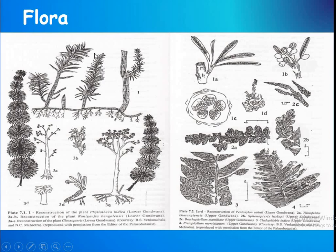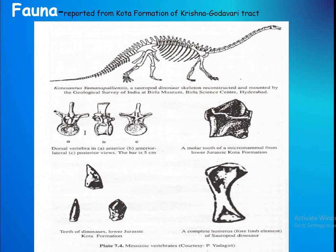These are the floras of the Gondwana. Lower Gondwana. The significant fossil is Glossopteris. Flora reported from the Kota Formation of the Krishna–Godavari tracts — that is the Kota Sauros.